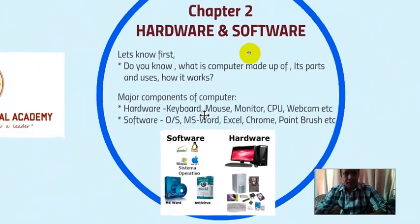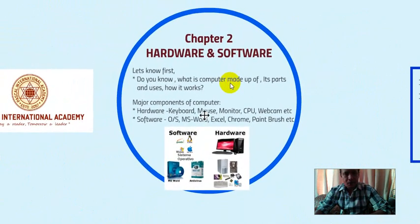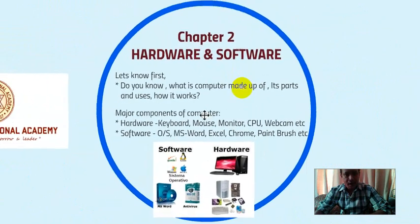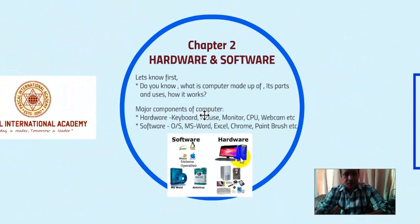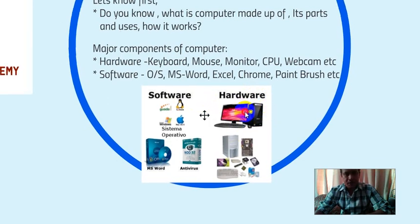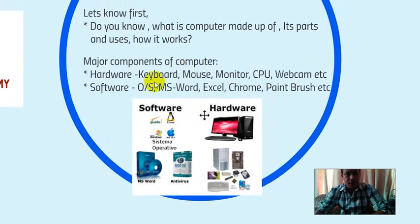A computer mostly has two parts: hardware and software. As you can see in the picture, there is software and hardware. Hardware means the physical parts of the computer, and software means the parts which make the computer work — that is called software.